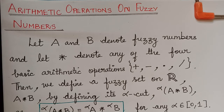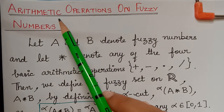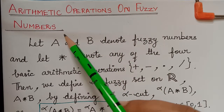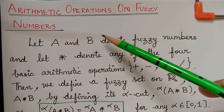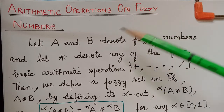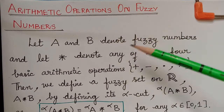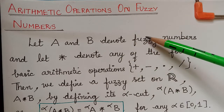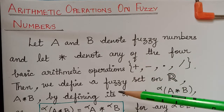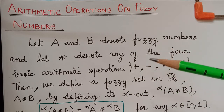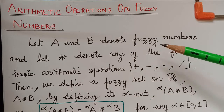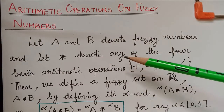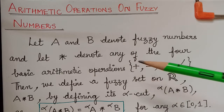Hello students. In this video we are going to learn about arithmetic operations on fuzzy numbers. There are two methods for developing fuzzy arithmetic. The first method is based on interval arithmetic, and the second method is based on the extension principle, by which operations on real numbers are extended to operations on fuzzy numbers. In this video we will be learning about interval arithmetic with the help of an example.